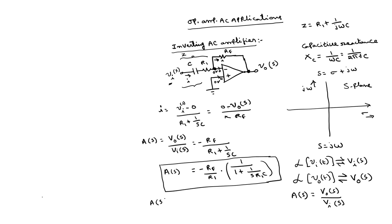Clearly, A(S) or A(jω) varies with frequency, and you can plot how AV0(jω) varies as a function of frequency. If Vi(S) is DC, you short-circuit the capacitance, and the equivalent circuit is the same as an inverting amplifier whose gain is simply Rf/R1. So the gain of the AC inverting amplifier varies with frequency, and you can design it based on requirements.